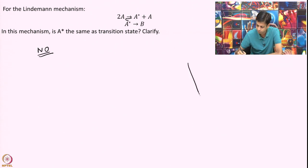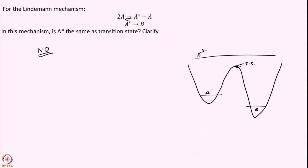If we draw a 1D energy surface, here is A and here is B, and this point is the transition state. But A* is any structure that is above the energy of the transition state — it can actually have the same coordinates as the reactant, just with a higher energy. So A* is not the transition state.